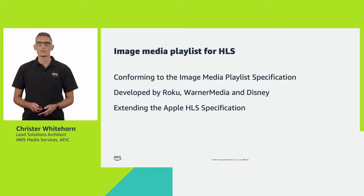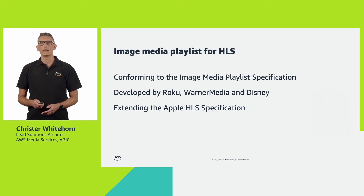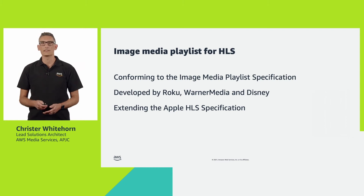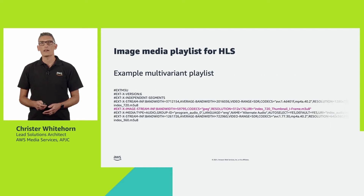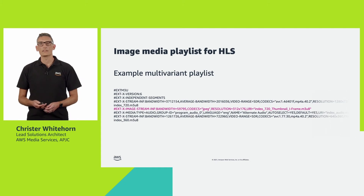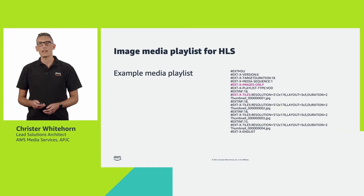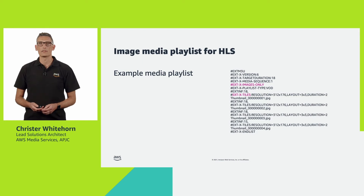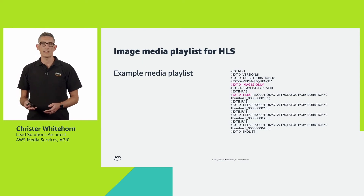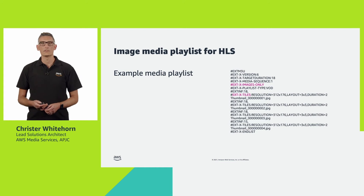Roku, in conjunction with HLS, WarnerMedia and Disney led the way in defining a method to add similar image playlist capability to HLS as an extension to the Pantos specification. The HLS master manifest looks similar to this — you can see there is a track defined under the EXT-X-IMAGE-STREAM-INF tag. Here is an example of the playlist manifest itself. There is a tag stating it contains images, and you can also see EXT-X-TILES tags defining each of the JPEG files, their resolution and layout etc.